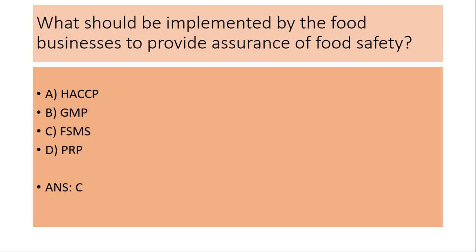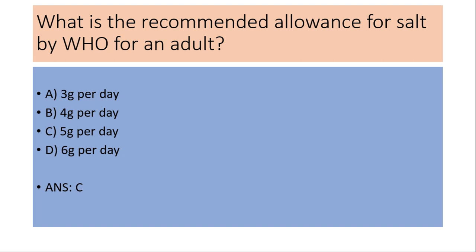What should be implemented by the food business to provide assurance of food safety? (a) HACCP, (b) GMP, (c) FSMS, (d) PRP. The answer is (c) Food Safety Management System. PRP means pre-requisite programs; GMP means good manufacturing practices.